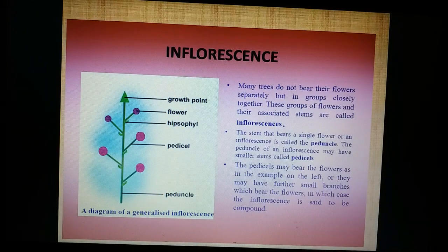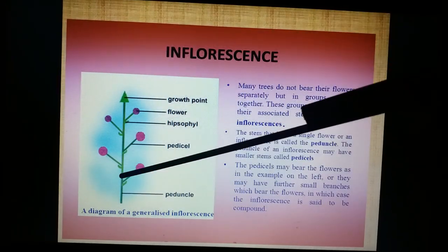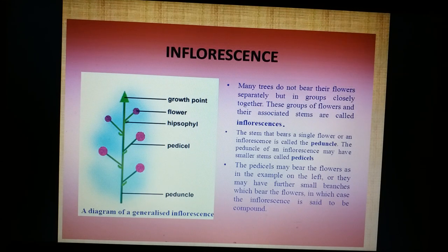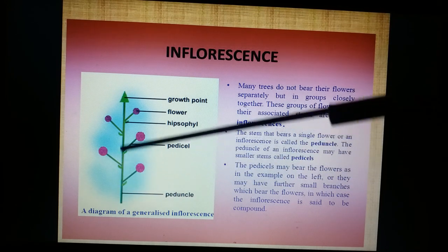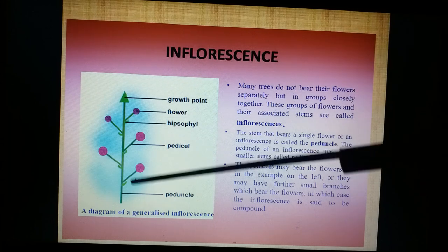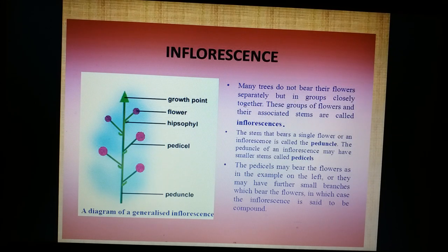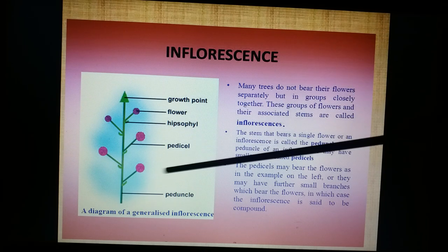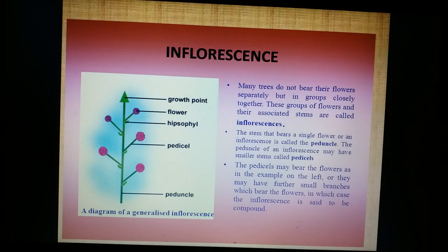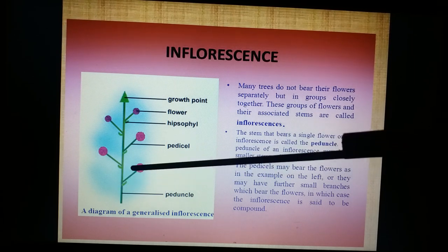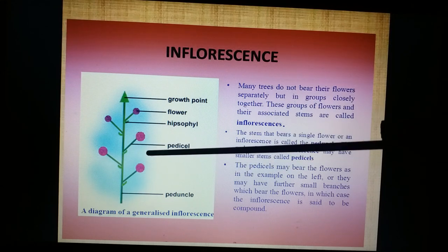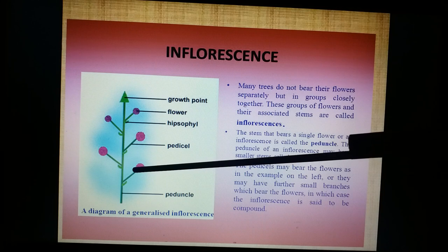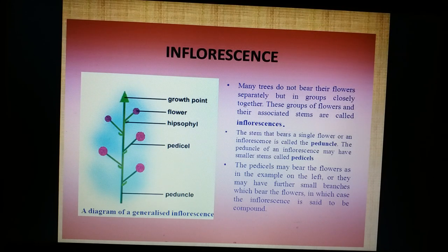Here is the fundamental structure of an inflorescence. A group of flowers on a common axis is called inflorescence. The common axis is called the peduncle. On this peduncle we have small scaly appendages called bracts. From the axil of these bracts the flowers will develop. Each flower has a stalk-like structure called the pedicel. A flower with a pedicel is called a pedicellate flower, giving us pedicellate inflorescence, and a flower without a pedicel is called sessile, giving us sessile inflorescence.